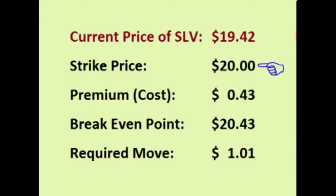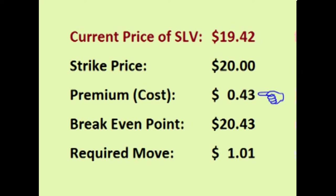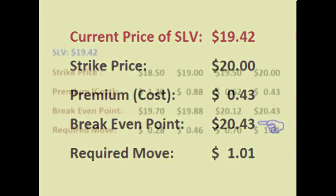The $20.00 strike locks in a preset buy price of $20 for an up-front cost of $0.43 a share. This option is further out of the money than the $19.50 option — for this option to have intrinsic value, the price of SLV has to move $0.50 more than it does for the $19.50 option. With a buy price of $20 and a cost of $0.43, SLV must climb above $20.43 for the trade to be profitable.